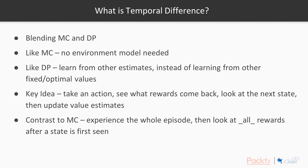Let's contrast that to Monte Carlo. In Monte Carlo, you experience the whole episode, and then you look at all the rewards after the state is first seen. You average all the rewards, and then that's the value of your state. Whereas in temporal difference, you simply look at the difference in time steps — hence temporal difference — and use that to nudge your value estimates or policy estimates slightly, in hopes that if you nudge them enough in the right directions over time, you nudge them all the way to the optimal policy.